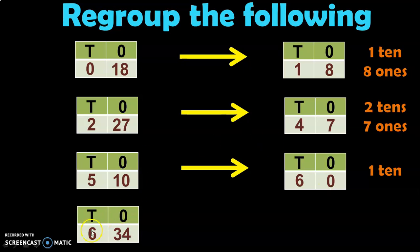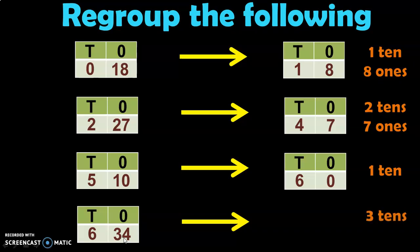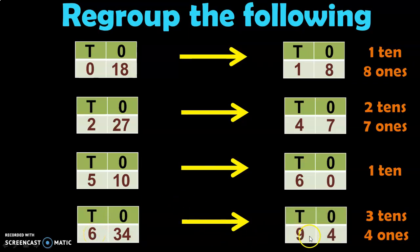Let us do one last example: 6 Tens and 34 Ones. First look at the Ones place which has 2 digits — 34 Ones. 34 Ones is 3 Tens plus 4 Ones. So the 4 will be retained in the Ones place and the 3 Tens will be moved to the Tens place. You get 6 plus 3, which is 9 in the Tens place and 4 in the Ones place — 9 Tens and 4 Ones, which makes 94.